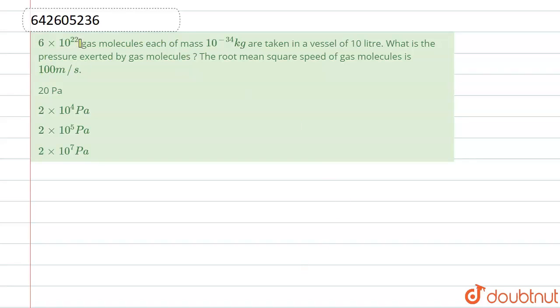is 6 × 10^23 gas molecules, each of mass 10^-34 kg, are taken in a vessel of volume 10 liters. What is the pressure exerted by the gas? The root mean square speed of the gas molecules is given as 100 meter per second.